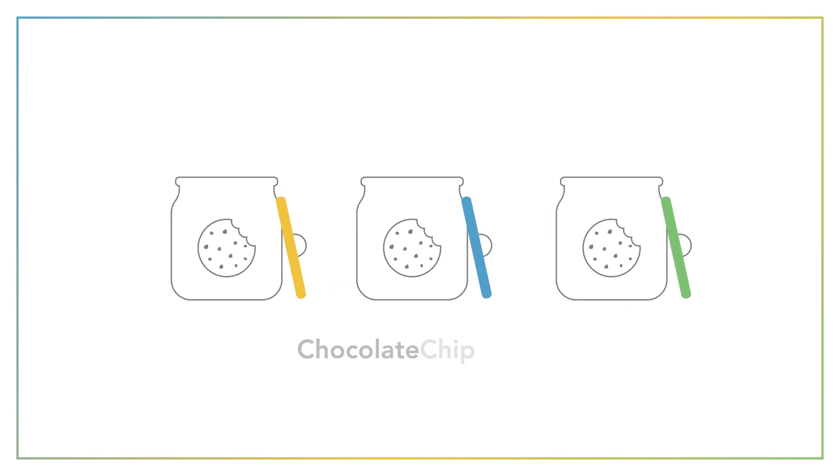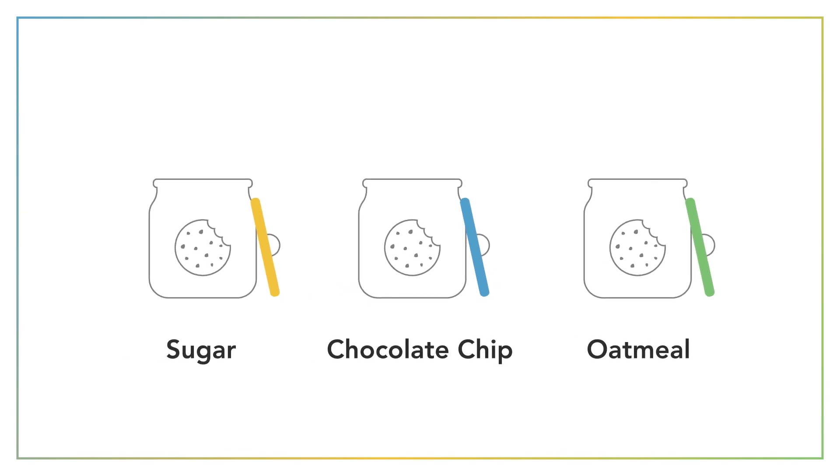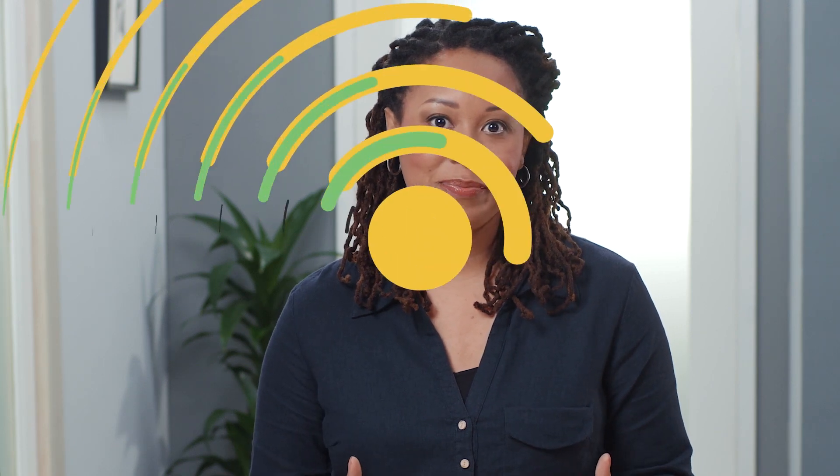Much like how we label jars in our kitchen so we know where to go for our favorite cookies, we declare variables in Python by giving them a name and then setting their value. This is called assigning the value, and this assignment is done with the assignment operator, which is the equal sign.